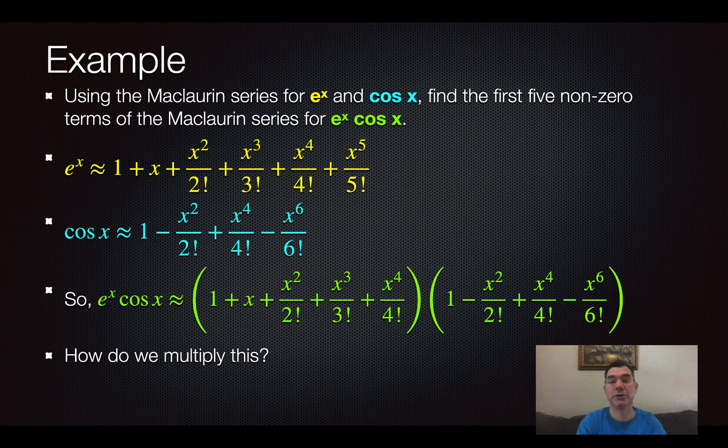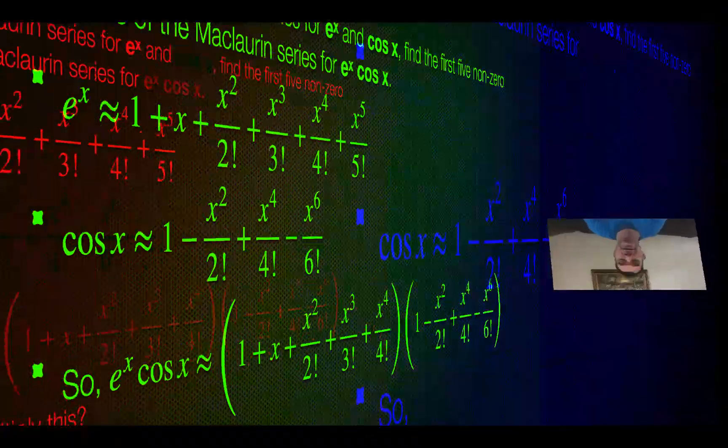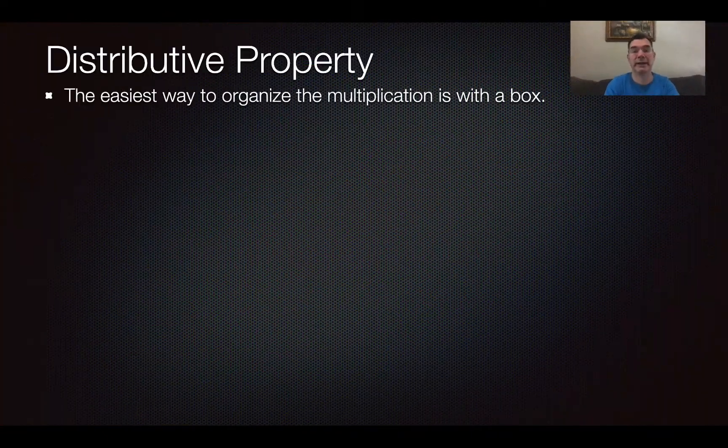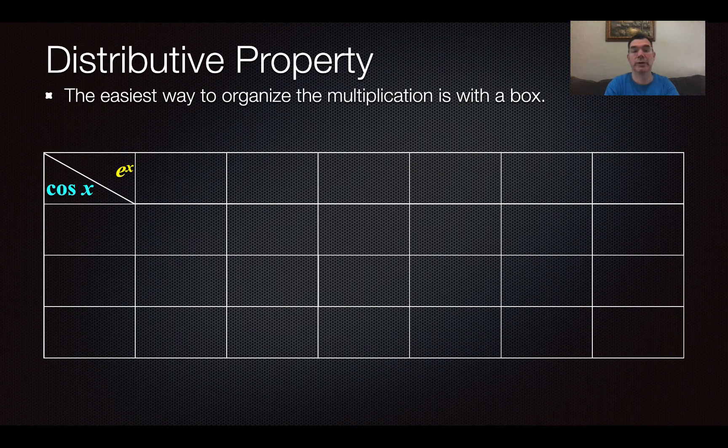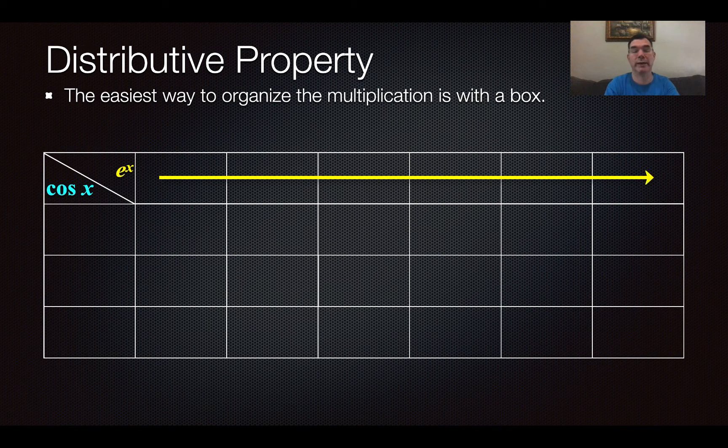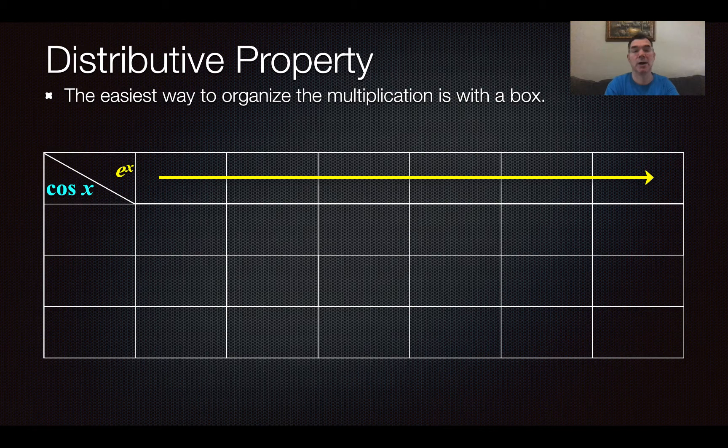But what I would do is I would use a box, and so I've set up a box right here. I've got e to the x. The terms of e to the x are going to go along the top row, and then the terms for cosine x are going to go in the left column.